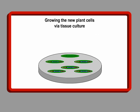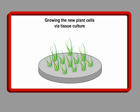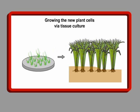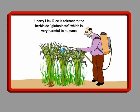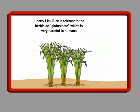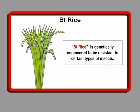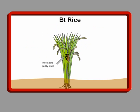We grow the plant cells with the new gene construct into new plants using further chemicals and hormones, and from this newly developing plant we can make many more of the same. Using these methods, one company in the US has made a GE rice called Liberty Link rice, which is tolerant to the herbicide Glufosinate. Another type of GE rice is BT rice, which produces its own insecticide to be resistant to certain types of insects, especially moths and butterflies.